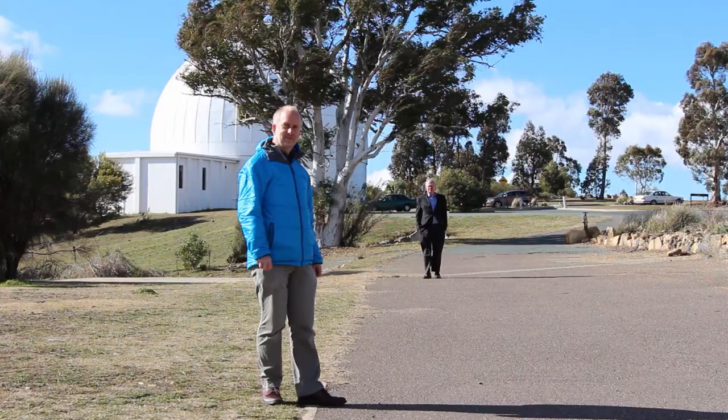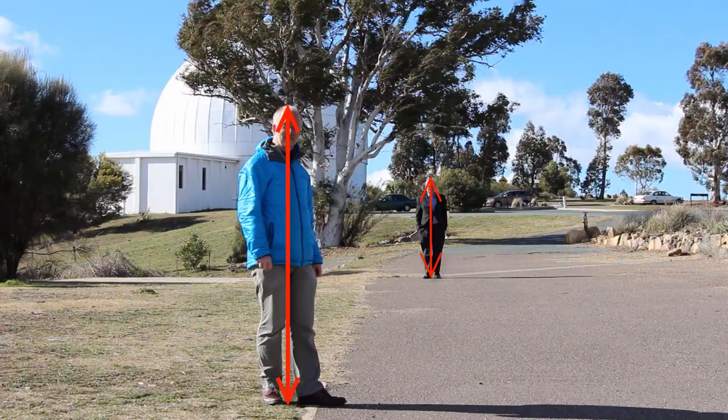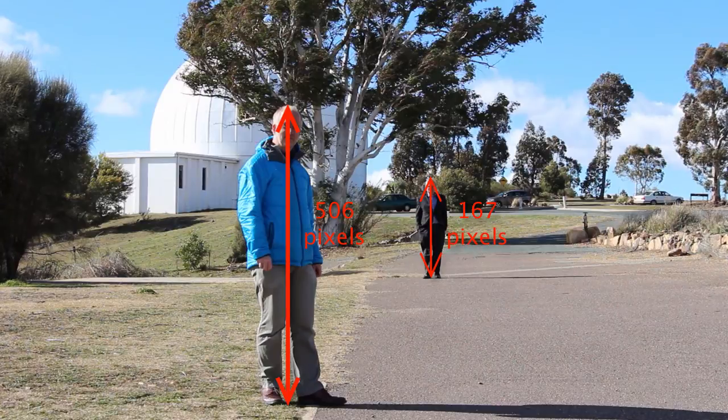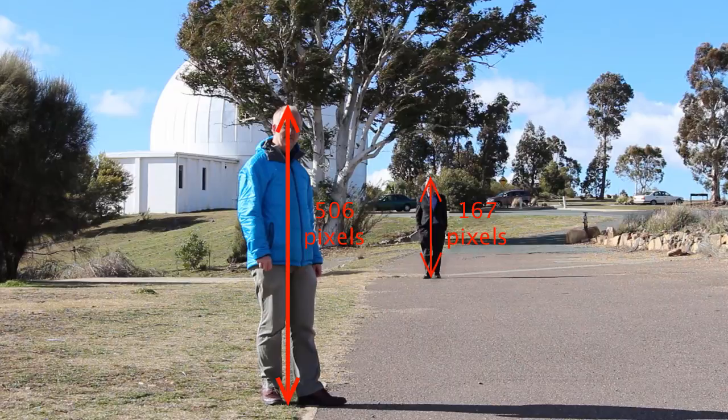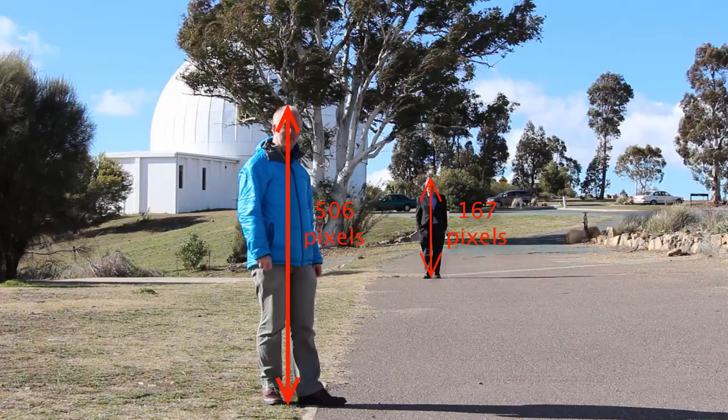I can measure how big our images are from this frozen frame of the video. And I come out as a whopping 506 pixels from head to toe. Whereas Brian comes out as a measly 167 pixels from head to toe. If you take the ratio, divide 506 by 167, you get 3.03. Very close to what we expect, a 3 to 1 ratio because he's three times further away than I am. So it actually seems to work.